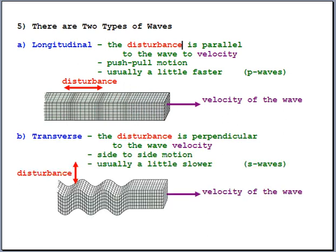For a transverse wave, the disturbance — the wiggling — is perpendicular to the overall wave velocity. It's a side-to-side motion. S waves and transverse waves typically travel slightly slower than P waves, both for earthquakes and in slinkies.